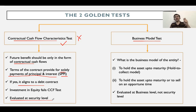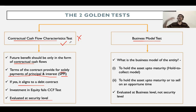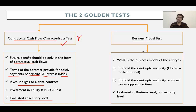The CCF test is done at a security level. That means for each individual investment I buy, I evaluate separately whether it satisfies the contractual cash flow characteristics test. I buy one investment today — I evaluate it. I buy another investment tomorrow — I evaluate that one separately. Each investment is evaluated individually.